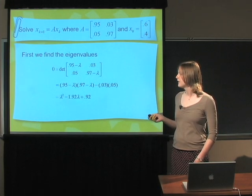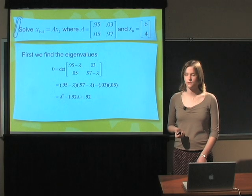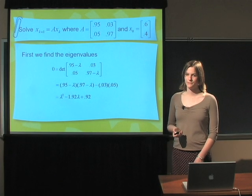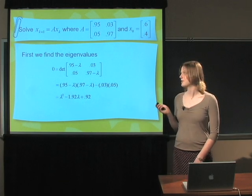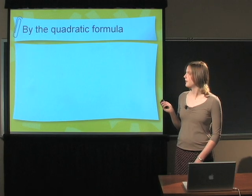Simplifying that down, we get lambda squared minus 1.92 lambda plus 0.92. This happens to be a quadratic equation, so we have to use the quadratic formula to find lambda.